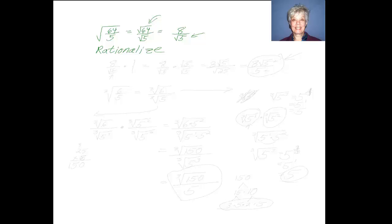Rationalize means to make rational. And remember that in mathematics, the word rational means fraction. Here we go. I have 8 over the square root of 5. How can I make the square root of 5 a number that's not in a radical?